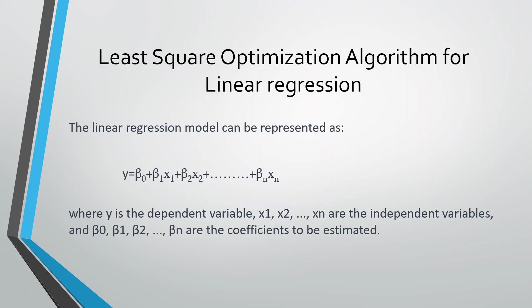What is the linear regression model represented as? y is equal to beta0 plus beta1*x1 plus beta2*x2 and so on, where x1, x2, and up to xn represent the independent variables. y is the dependent variable, which is dependent on the coefficients beta and independent variables x for change in its value.